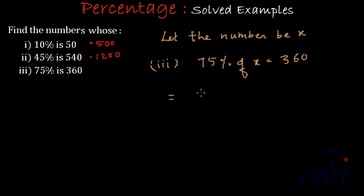75% of x can be written as 75% will be 75 by 100, because percent is nothing but the numerator of a fraction whose denominator is 100. So 75% of x will be 75 by 100 multiplied by x, and this will be equal to 360.